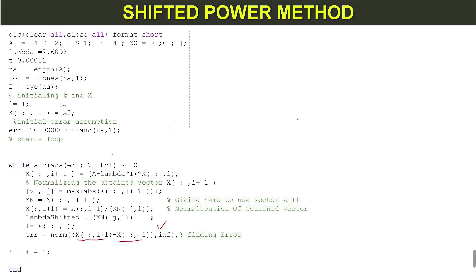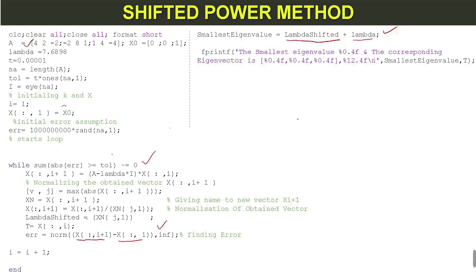If the while condition is not yet true, we go back to the next iteration. When the condition is true and iterations stop, we compute the smallest eigenvalue as lambda shifted plus the given dominant eigenvalue lambda.